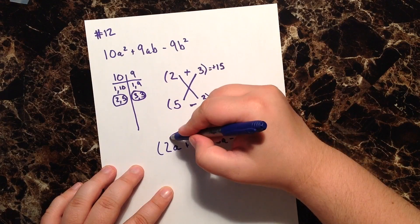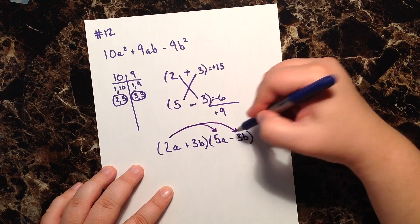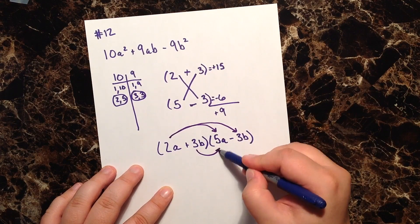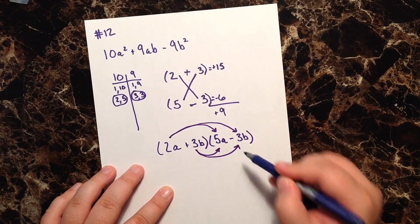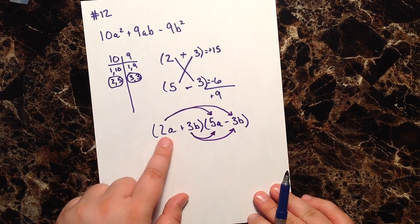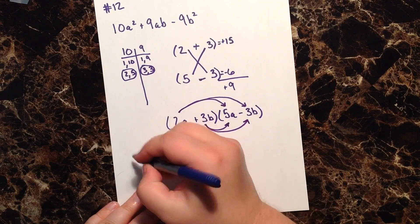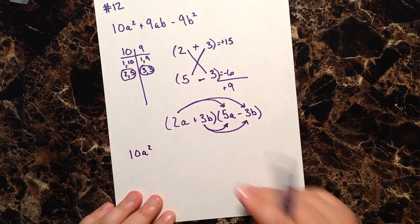So again, foiling, and you can go back a couple videos to find out what that process is. First outer inner last. So what is 2a times 5a? Well, that's simply 10a².